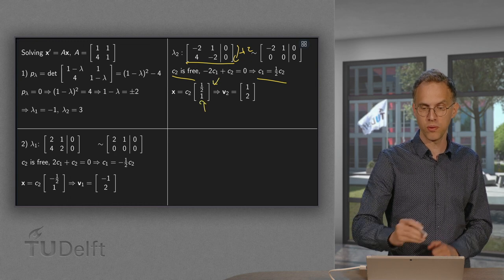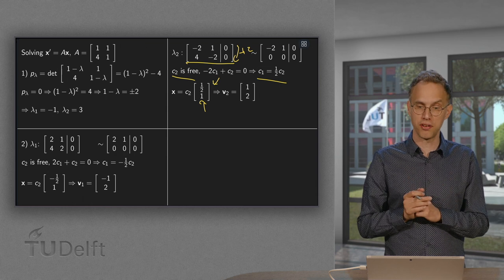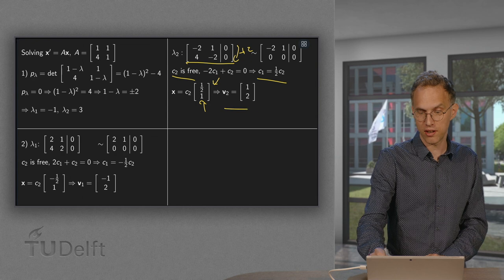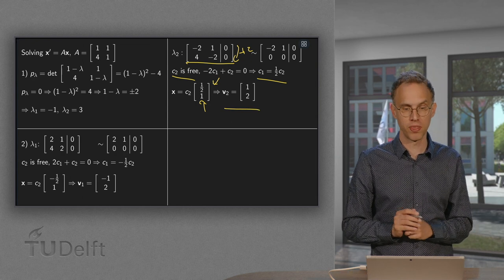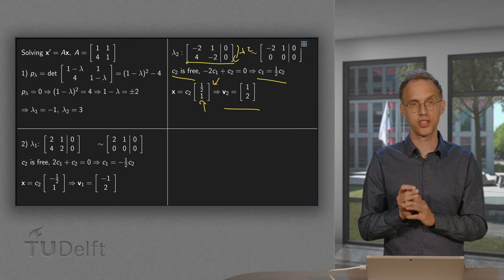And here the C₂. And we can take a convenient C₂ to get our second eigenvector. We take C₂ equals 2 to get our second eigenvector (1, 2). Of course, you can take any C₂ you like. Not 0, but all those are fine.